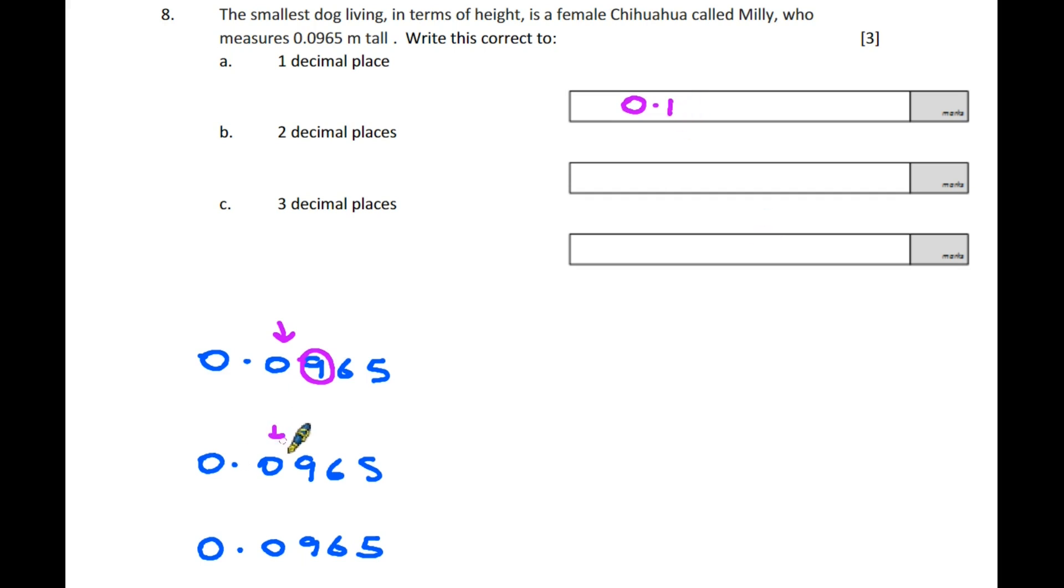Two decimal places: the zero and nine are two decimal places. We look at the six, which is five or above, so it rounds up. It pushes the nine into a ten, which goes to the next column. The answer is also 0.1.